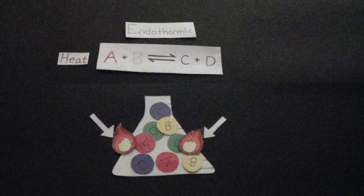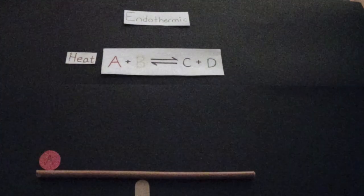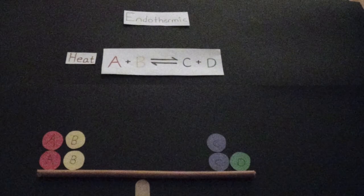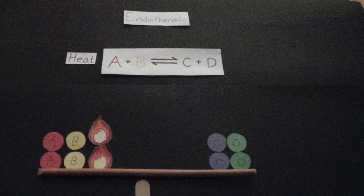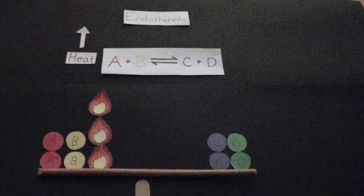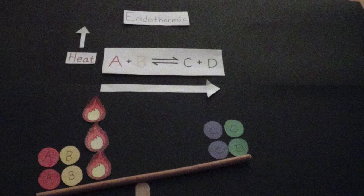An endothermic reaction has heat as a reactant. If temperature is increased, then the reaction will shift to the right in order to re-establish equilibrium.